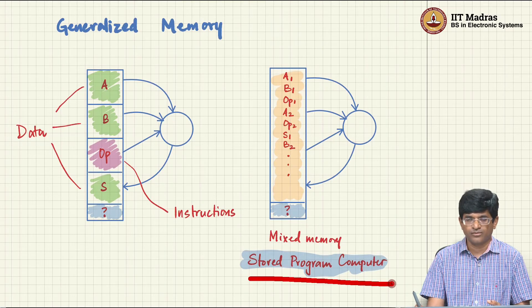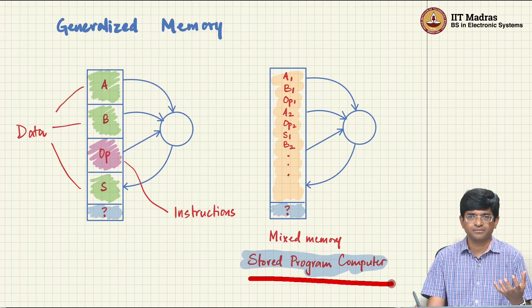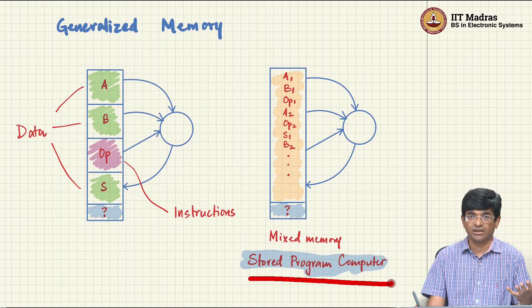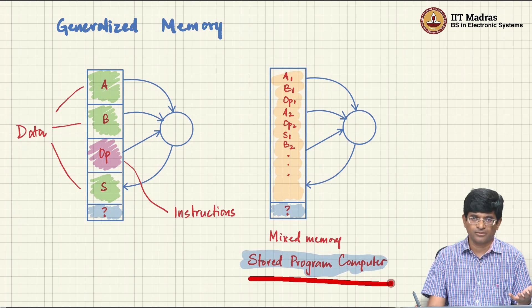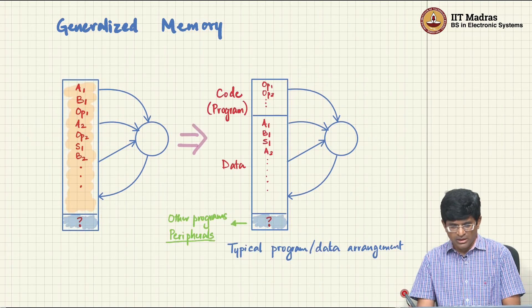And this was one of the key insights that led to this concept of what is called the stored program computer. Essentially what it says is you have a certain block of memory, use that in order to store the program that is going to drive the computer. And interestingly enough I can use that same block of memory also to store the data that the computer is going to work on.